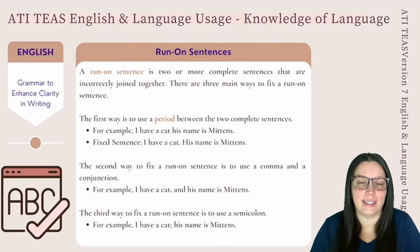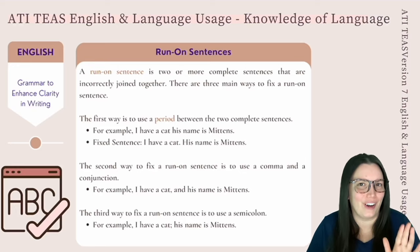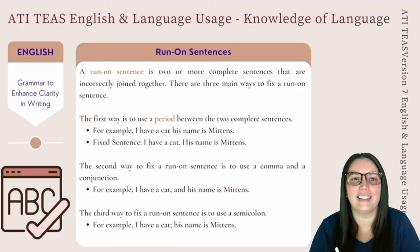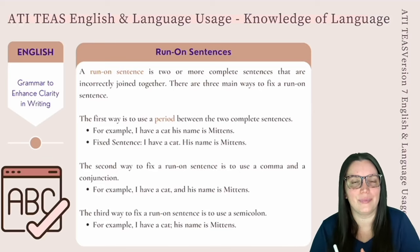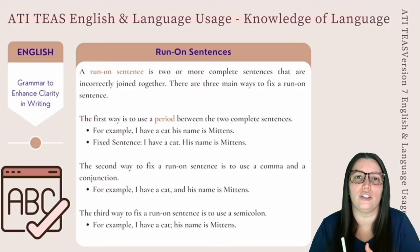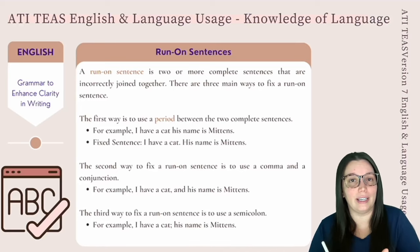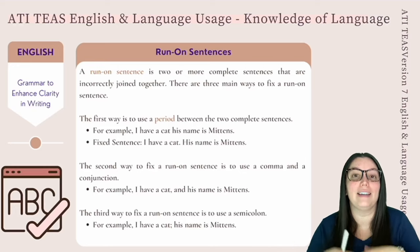Let's talk about run-on sentences. A run-on sentence is two or more complete sentences that are incorrectly joined together. There are three main ways to fix a run-on sentence. The first way is to use a period between two complete sentences. For example, I have a cat, his name is Mittens — these are two complete sentences put together incorrectly. You can fix it by writing: I have a cat. His name is Mittens. That separates the two complete sentences.